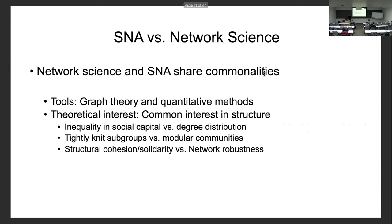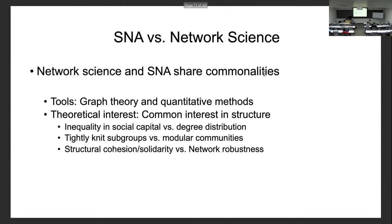One way to think about social network analysis is to contrast it with network science developed from the physical and natural sciences. One commonality is that both make heavy use of graph theory — these are common, powerful tools that can be applied to different contexts. There are also similar theoretical interests, though using different terminology.